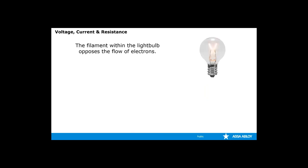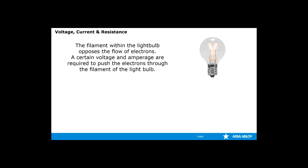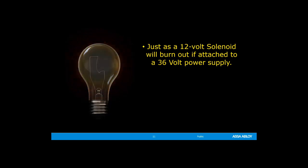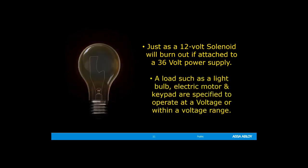The filament within a light bulb opposes the flow of electrons. A certain voltage or amperage is required to push the electrons through the filament of the light bulb. If the voltage or the amperage is insufficient, the filament will prevent the flow of electrons and the light will not produce any light. What also needs to be considered is the wire run. Even though wire is a great conductor of electrons, it still opposes some resistance to the flow of electrons and therefore must be taken into consideration. Just as a 12-volt solenoid will burn out if attached to a 36-volt power supply, a load such as a light bulb, an electric motor, or a keypad requires a specific voltage or particular voltage range. If the voltage is too great, the load will burn out and no longer function.